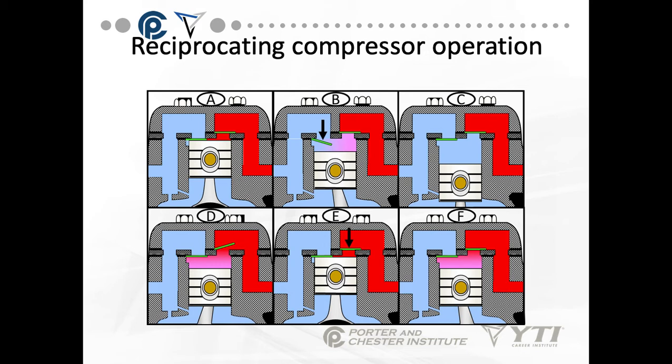At point E, the piston is all the way at the top. Then at F, the piston begins its downward rotation and starts the whole cycle over again.